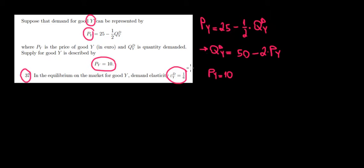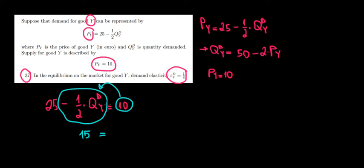We know that the price will be equal to 10. In other words, 25 minus 1 over 2 multiplied with the quantity demanded of Y is equal to 10 euros. Now we take the price to the other side, so we take 10 to the other side. We'll have 25 minus 10, which is 15. And then we transfer this one to the right, which is equal to 1 over 2 multiplied with the quantity demanded of Y.